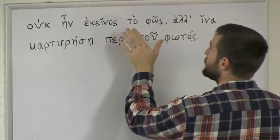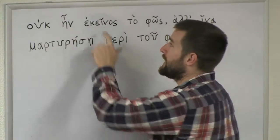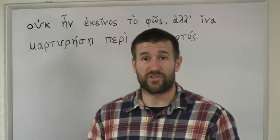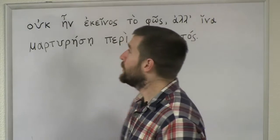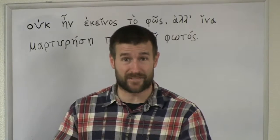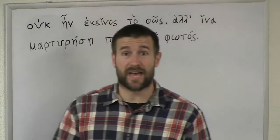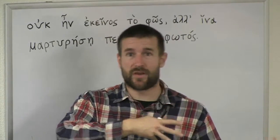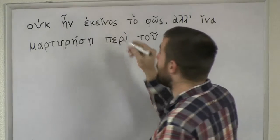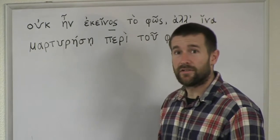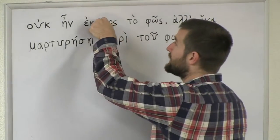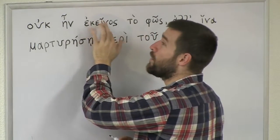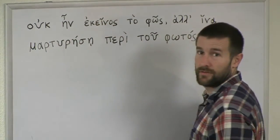So ouk ēn ekeinos to phōs. We know phōs means 'the light'. Ekeinos — we briefly mentioned this in the lesson on demonstrative pronouns for John 1:2, when we talked about houtos. Houtos was the demonstrative pronoun normally translated as 'this' or 'this one'. Ekeinos is actually the opposite of that because it means 'that' or 'that one'. In Greek you have houtos and you have ekeinos. Notice the ending of ekeinos is the masculine, singular, nominative case ending. So literally in Greek, this is saying: 'that one' — talking about John, whom we just mentioned — 'that one was not the light.'